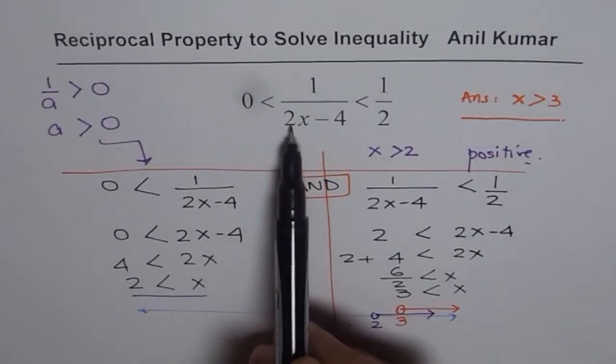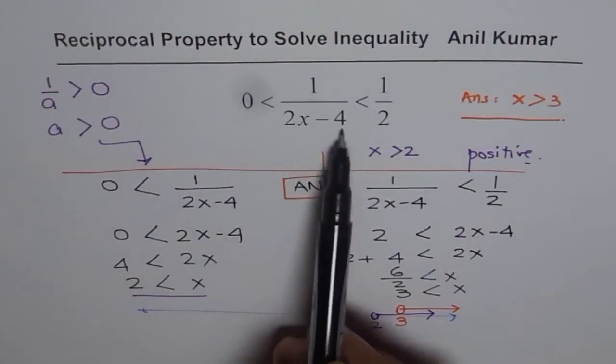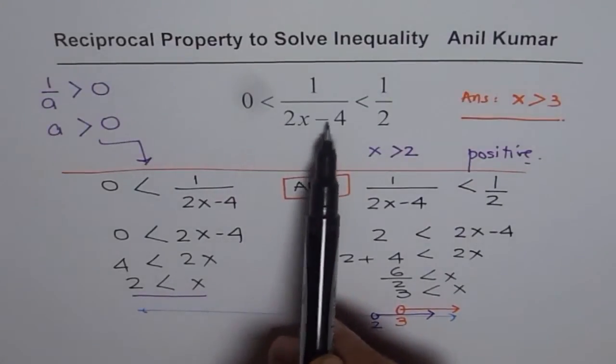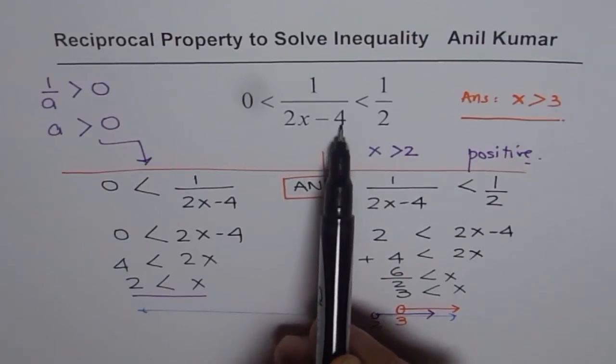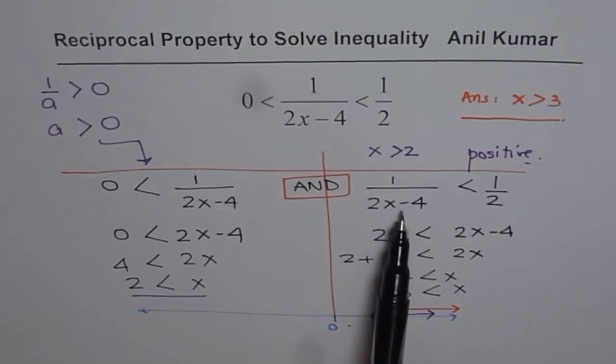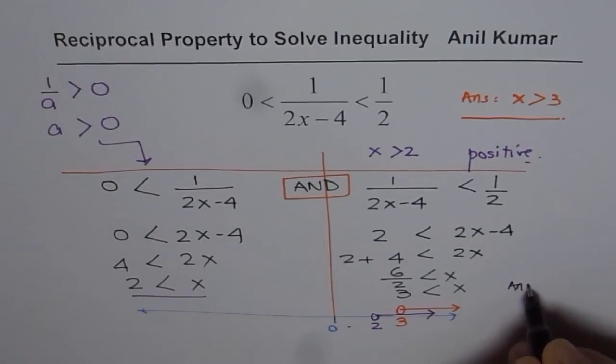Since 1/(2x - 4) > 0, we know this is a positive term. If 1/(2x - 4) is positive, then 2x - 4 is also positive. This helped us solve both inequalities separately. Combining the conditions with AND, we got our answer: x > 3.